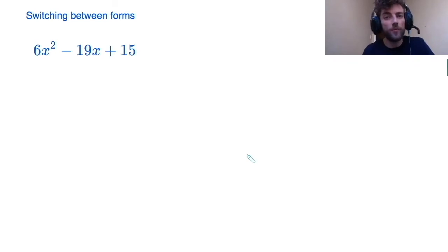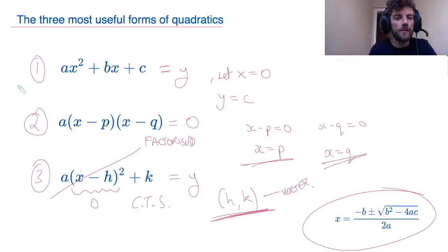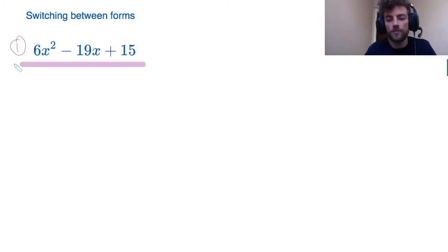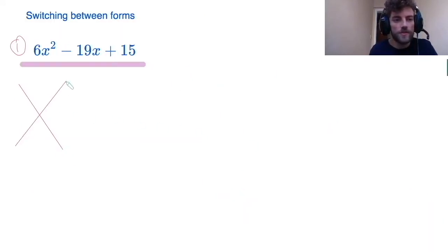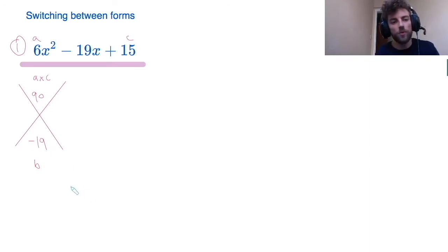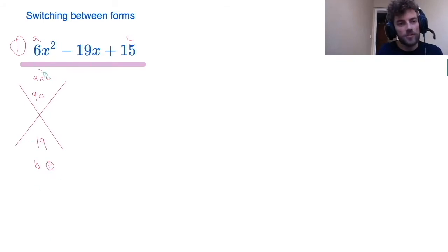Now we need to check that we can get between all of the forms. Let's start going from form 1 to form 2. Here is an example quadratic equation in form 1 — ax squared plus bx plus c — and I'm going to write it in the factorized form. I like to draw a little cross here and take the product of a and c. This is a and this is c, so 6 times 15 is 90. And over here I put b, which is minus 19.